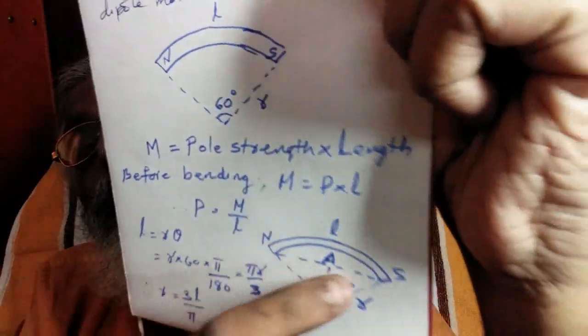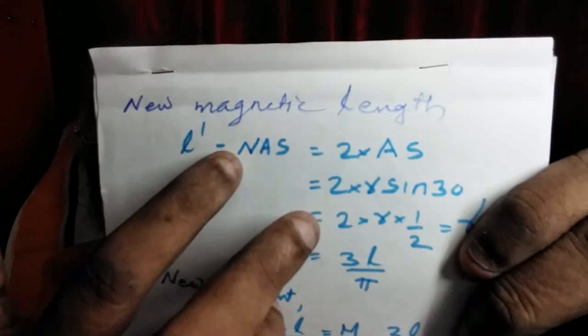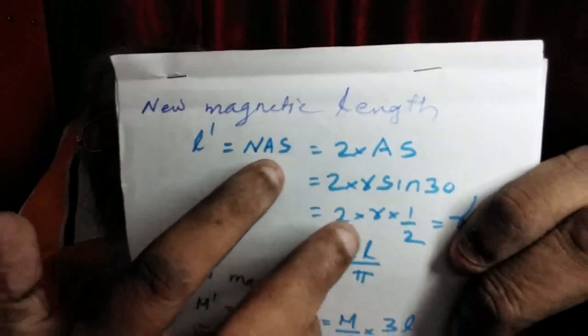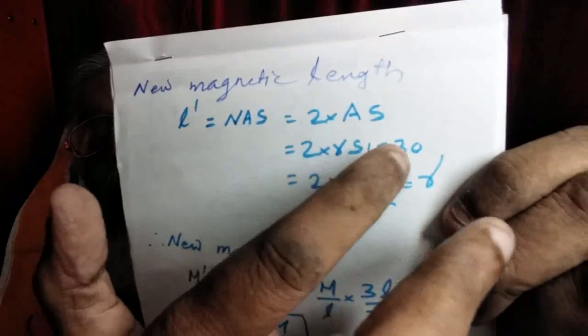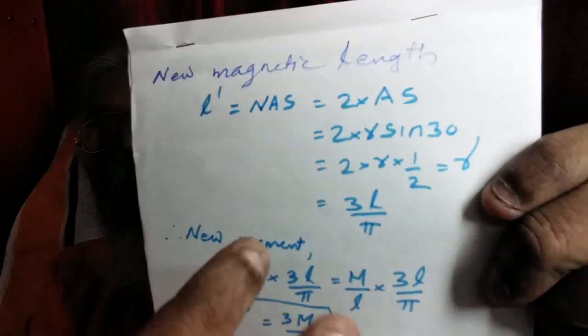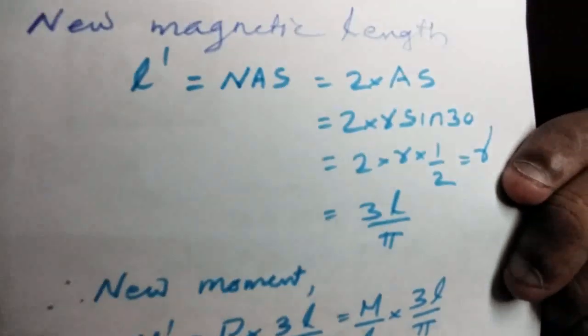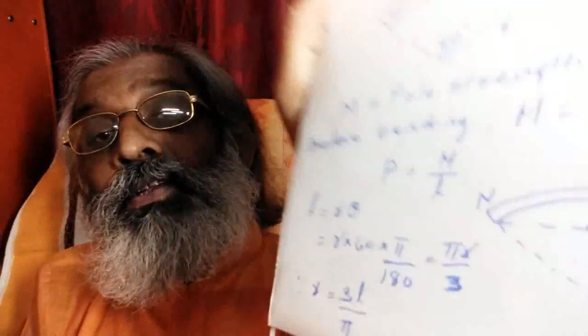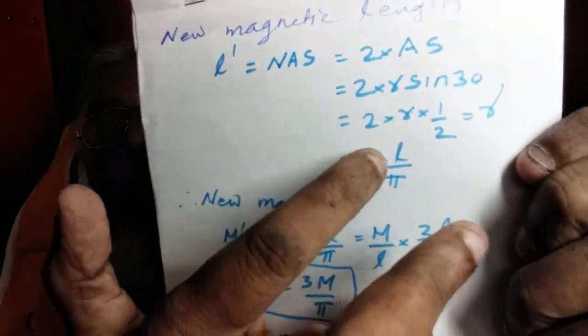The new magnetic length N to S, that is 2 into R sin 30. That is 2 into R, sin 30 is half. So we get 2 into R, R is 3L by π. We will get 3L by π. Now the magnetic length is 3L by π.